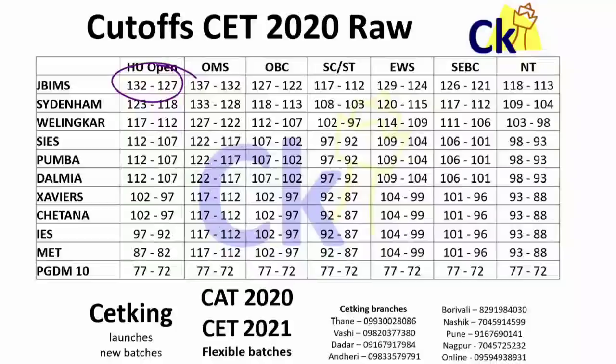Toh aapka agar is paper me yeh range me score aaya final score, toh aapna bahut bada chance hai IB jane ka. There will be many times jab aapke question ko laga ki aapne answer thik maara hai lekin actually wrong tha - end of the day wohi right hai jo book me likha hai. Ulta bhi ho sakta hai - jo tukke maare ho sab thik ho jaaye. Score plus minus 10 marks ho sakta hai.